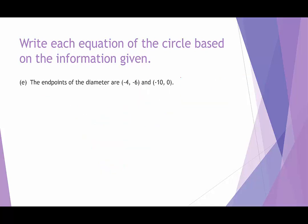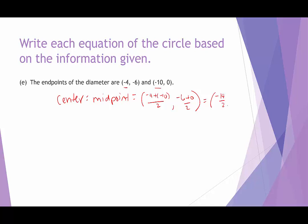In our last two examples, we're given endpoints of a diameter: negative 4, negative 6 and negative 10, 0. We're not given the center, but the midpoint of a diameter is the center of the circle. To find the midpoint: add the x-values — negative 4 plus negative 10 — divided by 2, and add the y-values — negative 6 plus 0 — divided by 2. That gives negative 14 over 2 and negative 6 over 2, so the center is negative 7, negative 3.